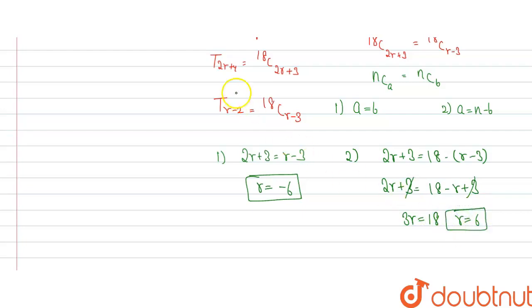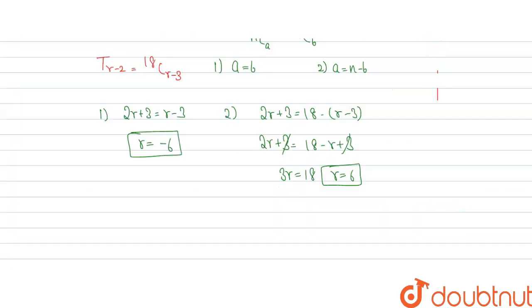As we have to find the value of R, and we know that the value of R can never be negative, R equals minus 6 will not be the answer. Therefore, the value of R equals 6 will be the answer.